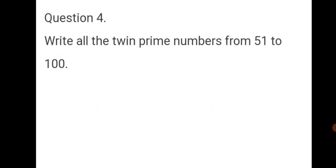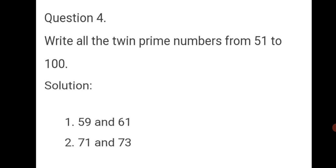Question 4: write all the twin prime numbers from 51 to 100. Twin prime numbers are those where the difference between two co-prime numbers is 2. The pairs are 59 and 61 — their difference is 2 and they are co-prime — and 71 and 73 — 73 minus 71 is 2 and they are also co-prime. So there are two pairs of twin prime numbers from 51 to 100: 59 and 61, and 71 and 73.